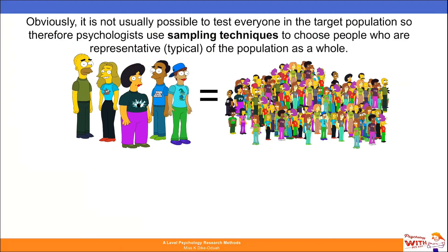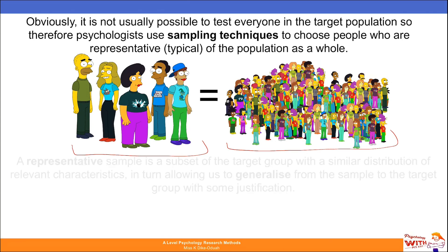Obviously it's not usually possible to test everyone in the target population. Therefore psychologists use sampling techniques to choose people who are representative or typical of the population as a whole. The idea is that the sample should reflect the general population and that helps with generalizability.